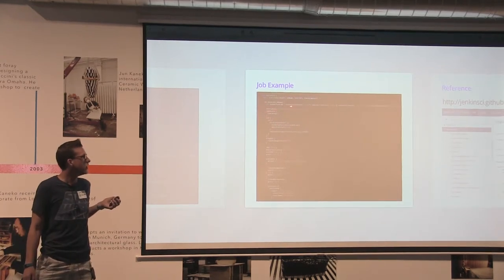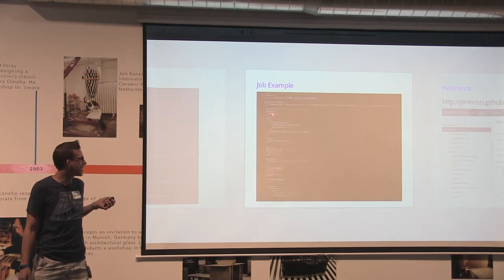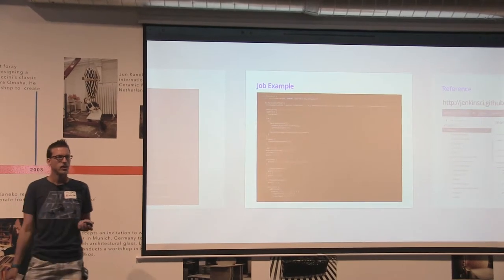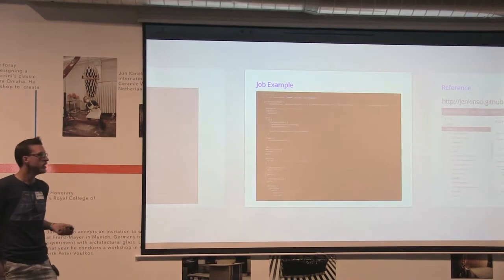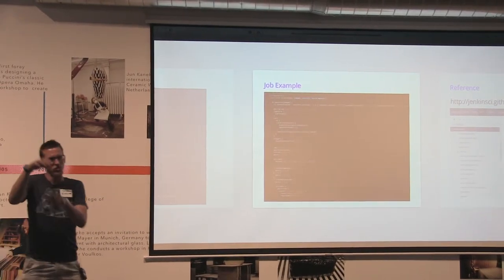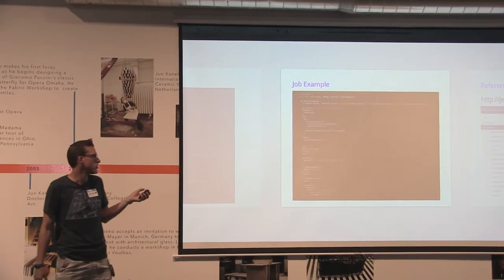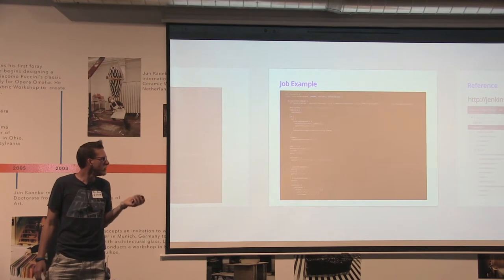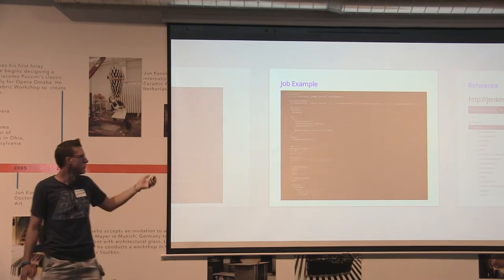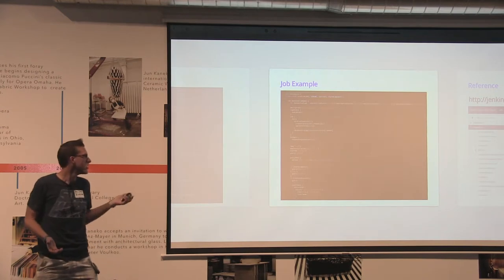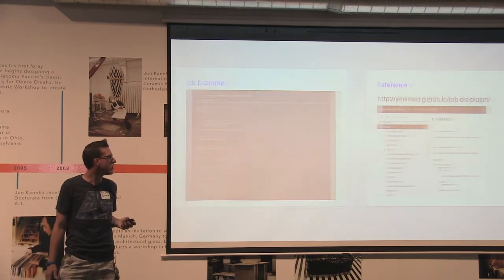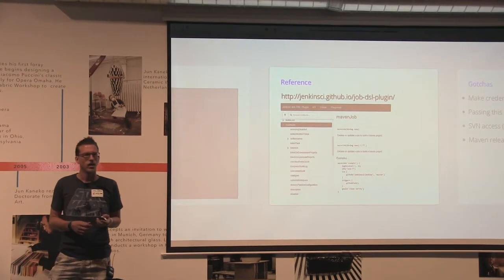The Job DSL lets you specify in code what your Jenkins job should look like — description, log rotation, source control settings — essentially the same things you'd configure by clicking 'Configure' on a job, just in script form. We also add logic to differentiate a standard Maven job from a shared component job; for shared components we use the 'deploy' Maven goal instead of 'verify'.